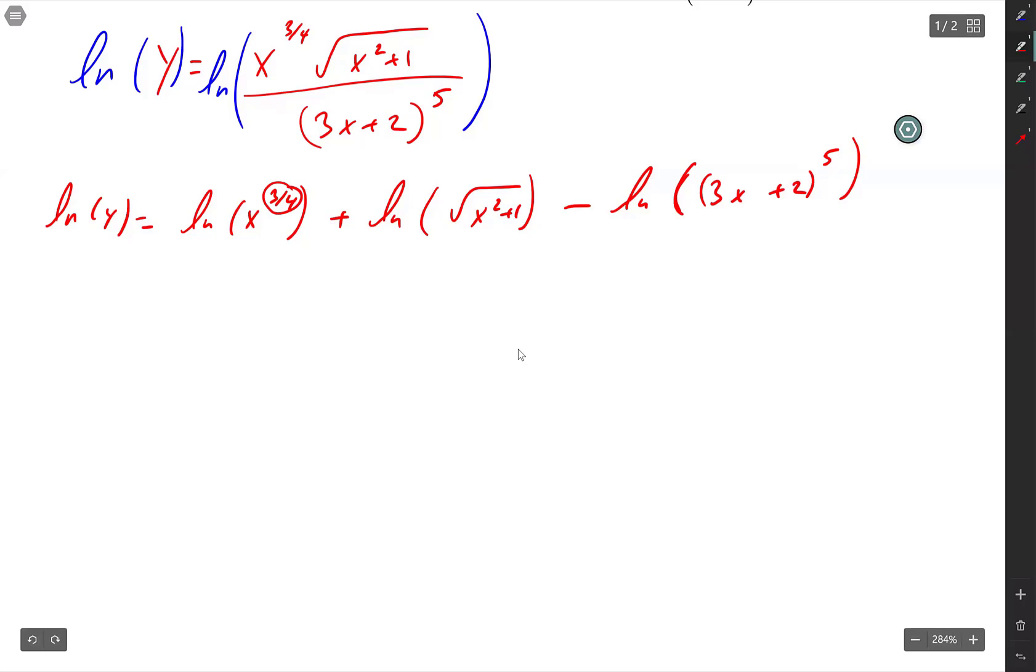So you see these exponents? This has an exponent. You just don't see it. It's x squared plus 1 raised to the half. I'm going to move them to the front using the power rule of logs. So I'm going to have ln of y equals 3/4 ln of x plus, that's a half there, so 1/2 ln of x squared plus 1 minus, that's a 5 there, 5 ln of 3x plus 2.